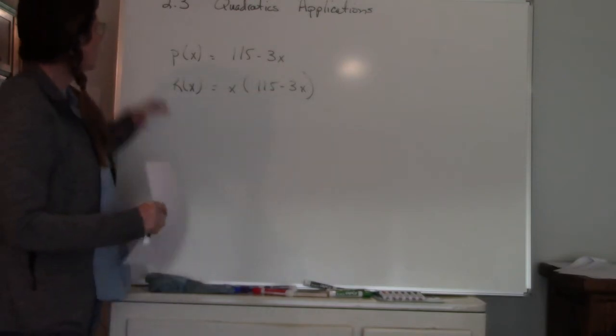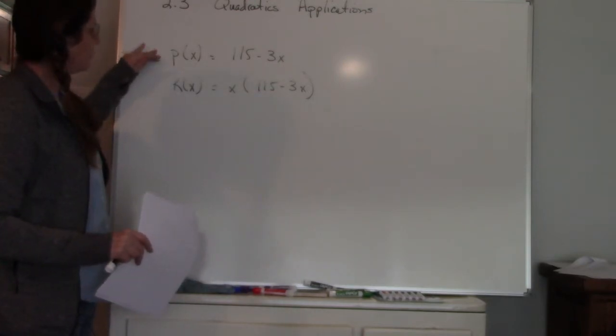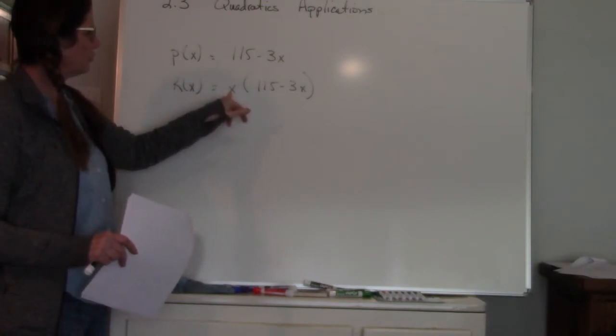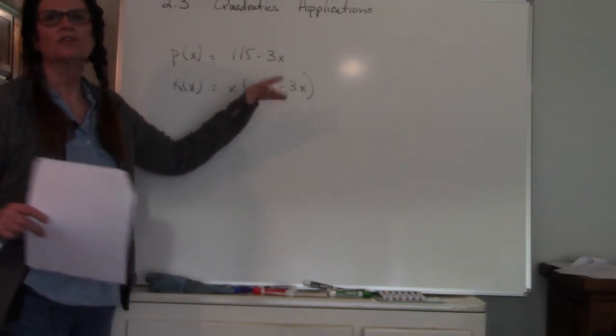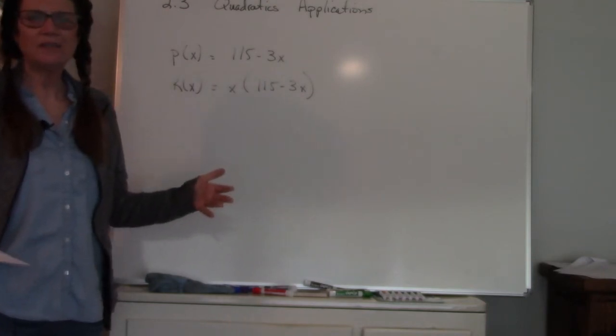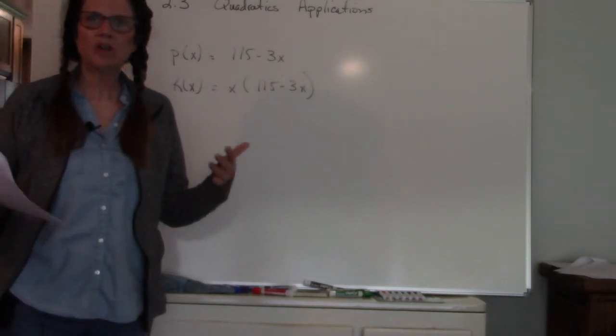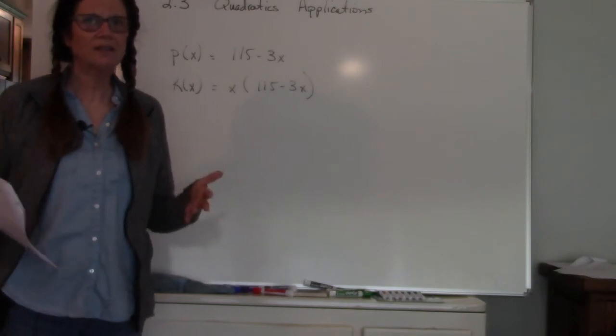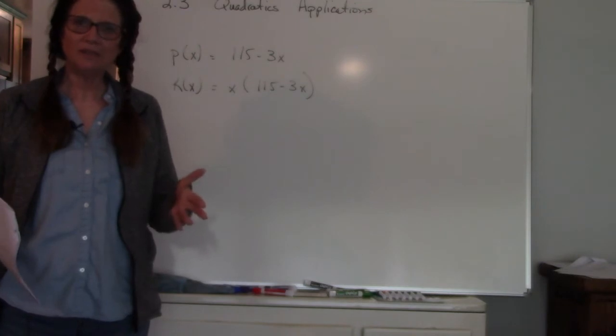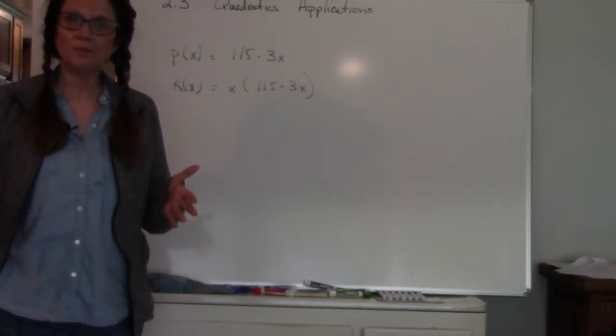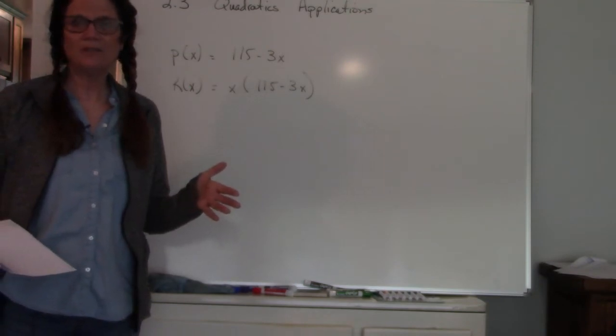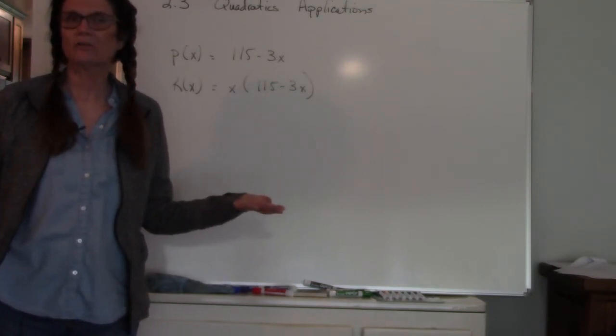In this case we have a price demand function and we have a revenue. So remember revenue is the number of products times the price. So for instance if I'm selling movies, DVDs, and let's say I am charging $15 each, so my revenue is going to be 15, the price that I'm charging, times the number of products. So if I sold a hundred DVDs I'd end up with $1,500 in revenue.